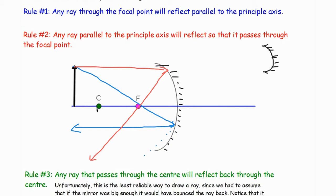That ray will meet up at the focal point. The third rule: any ray that enters through the center of curvature — this one is hard to see, we really have to follow the mirror back — it's going to come directly back through the center, so it bounces right back. This ray diagram shows what happens when light reflected off the top of an object strikes the mirror. The top of the object appears down here and the bottom is reflected straight in and straight out, giving us an image that appears here.